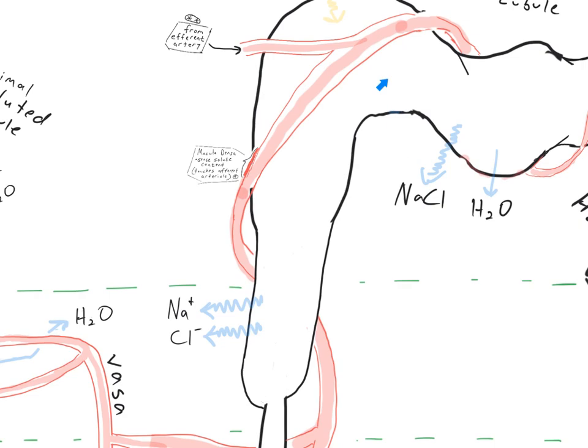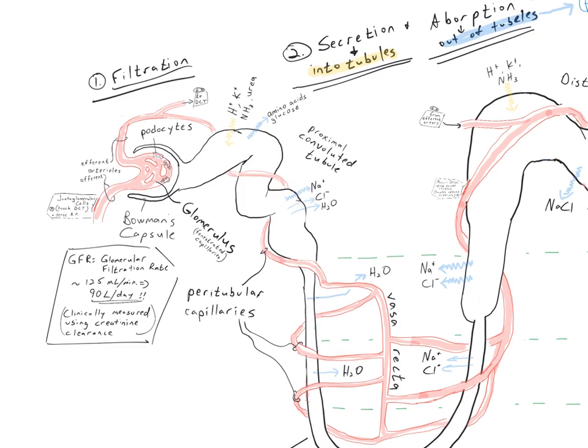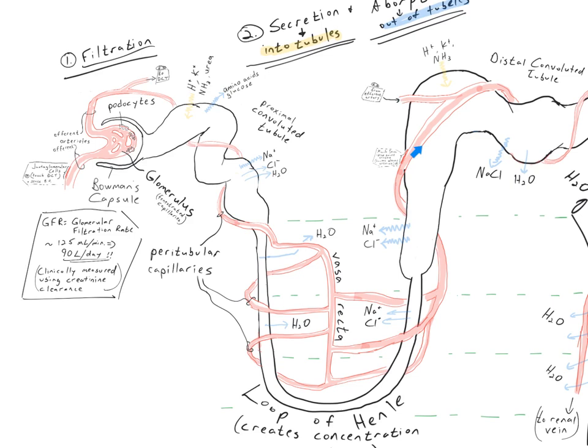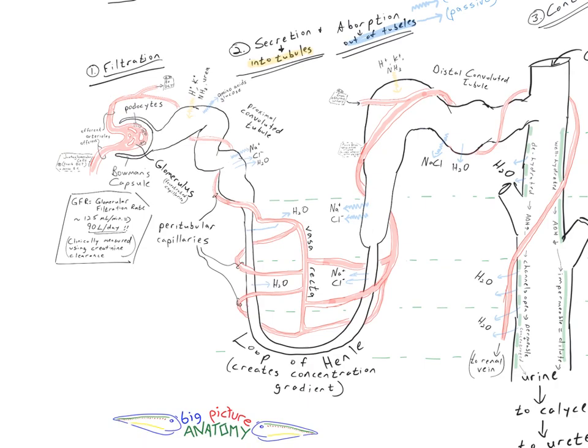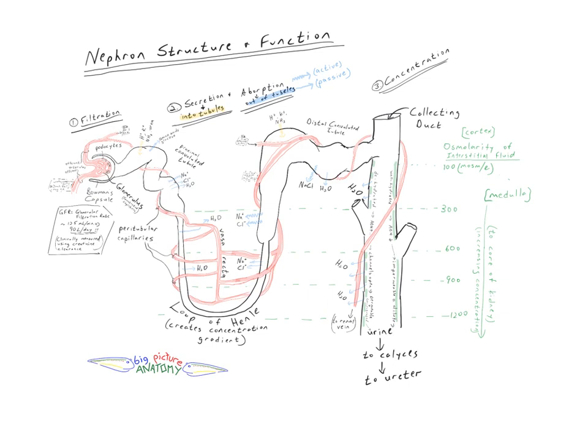What happens is there's a feedback loop from the macula densa cells to the juxtaglomerular cells to regulate the blood pressure going into the glomerulus, determining what the filtration rate is based on the solute content coming out the other end going into the collecting duct. That's just one small part of the entire way in which the kidneys regulate concentration and solute contents, but it gives you an idea of how the entire nephron is put together.